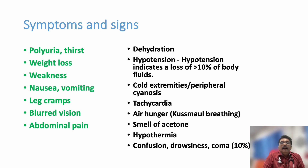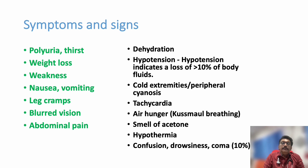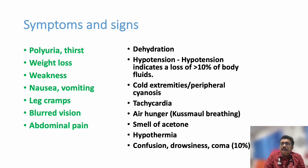Signs include dehydration, hypotension, cold extremities, peripheral cyanosis, tachycardia, Kussmaul's breathing (rapid breathing classical for all types of acidosis), smell of acetone, hypothermia, confusion, drowsiness, and coma. Diabetic ketoacidosis refers to ketoacidosis with ketone bodies and acidosis; diabetic coma refers to ketoacidosis progressing to coma.